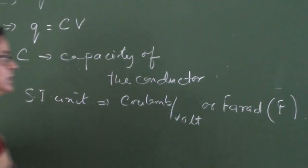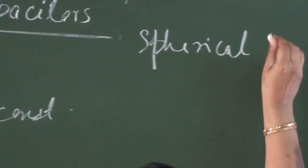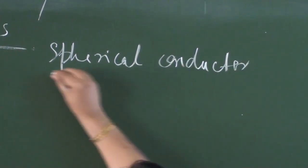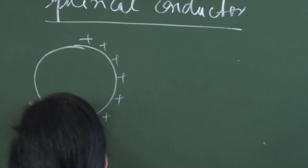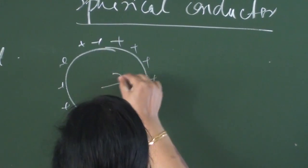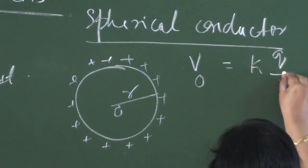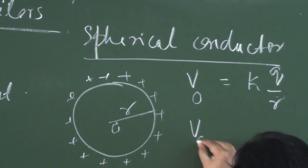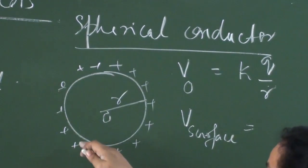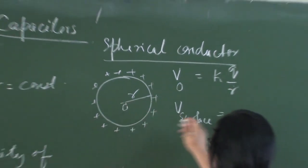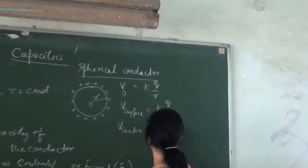Now, to understand what capacity means and how much charge a conductor can hold, let me consider a spherical conductor of radius R with charge uniformly distributed over its surface. If we find the potential at the center O, it is KQ by R. And if we find the potential at the surface, we imagine the entire charge lying at the center, so it is again KQ by R. Thus the potential at the center is the same as the potential at the surface.